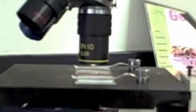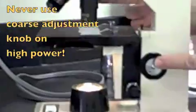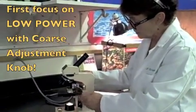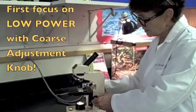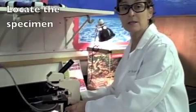What you were doing was you wanted to use this knob on high power. As I said, we always begin by focusing on low power on the coarse adjustment knob. This helps us to locate the specimen.